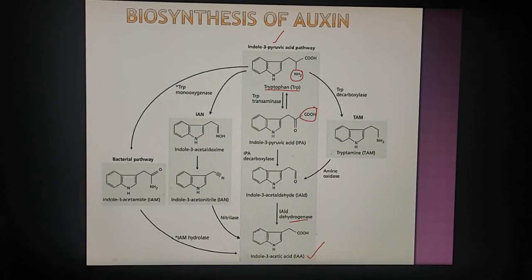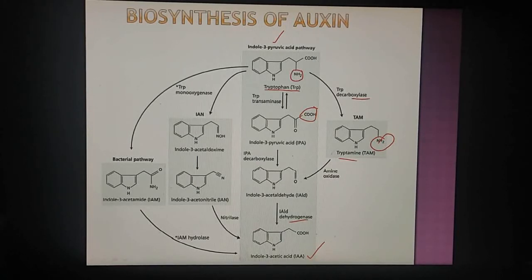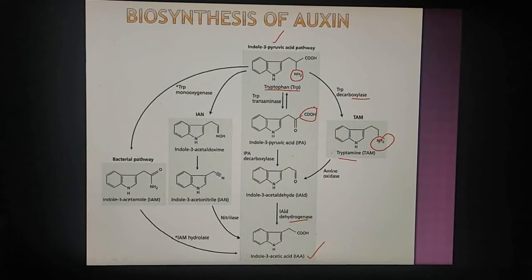The second pathway is the TAM pathway. In this pathway, the order of reactions is reversed — decarboxylation occurs first to produce tryptamine, then deamination. In the deamination reaction, the NH2 group is removed in the presence of amine oxidase to form indole-3-acetaldehyde, which finally becomes indole-3-acetic acid. Both these pathways are found in tomato.